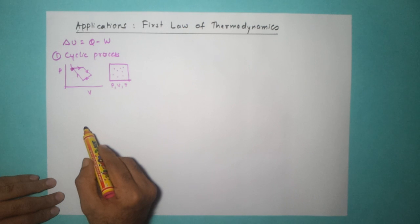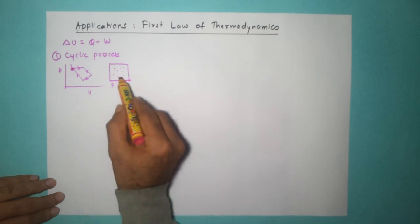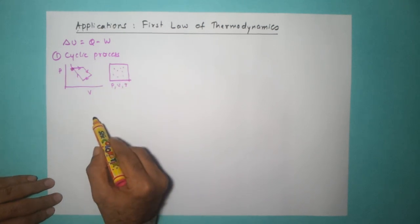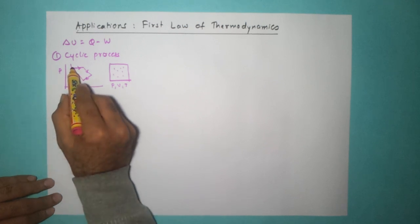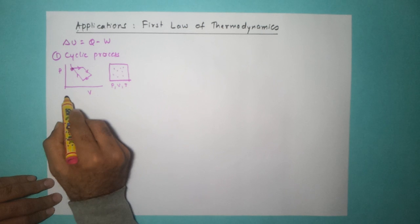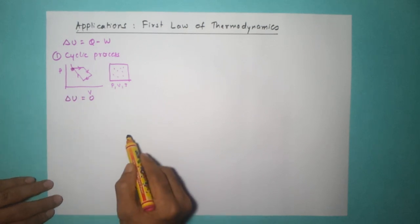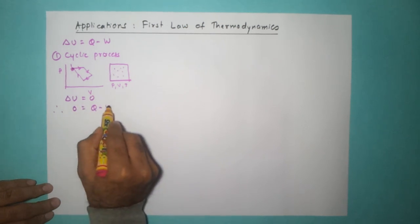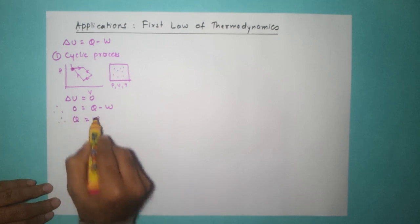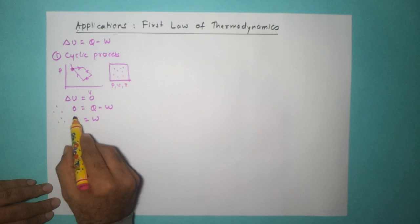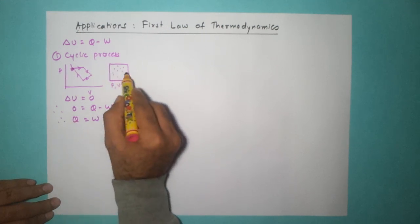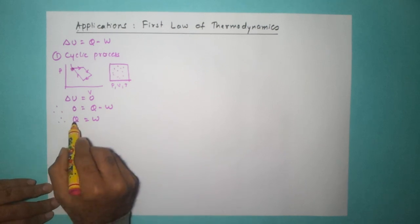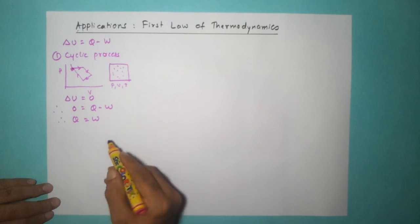We know that internal energy is a function of the state of the gas. So if PVT comes back to the same value at the end of the process, then internal energy at the beginning and at the end remains the same. Therefore, for a cyclic process, delta U is zero. Applying the first law: zero equals Q minus W, therefore Q equals W. The entire heat energy given to the gas is used for doing work — there is no change in internal energy.